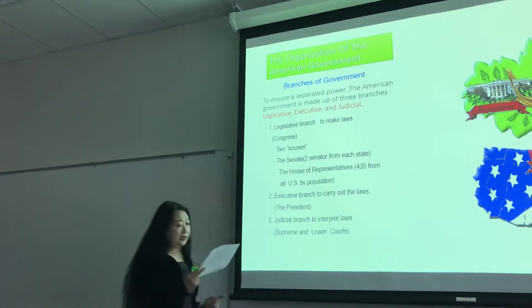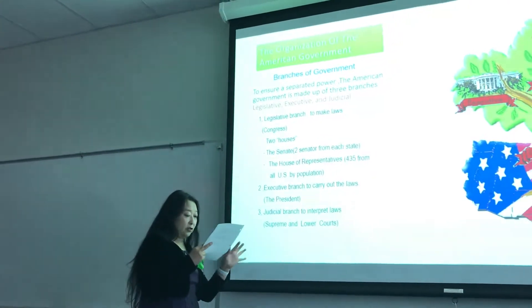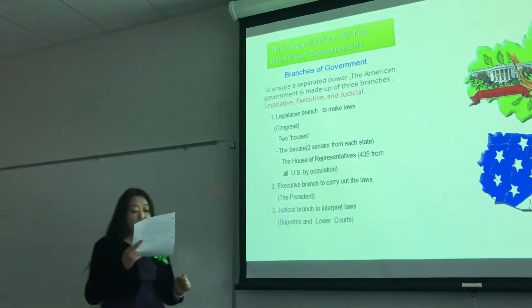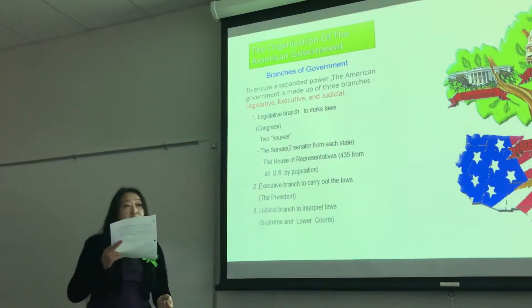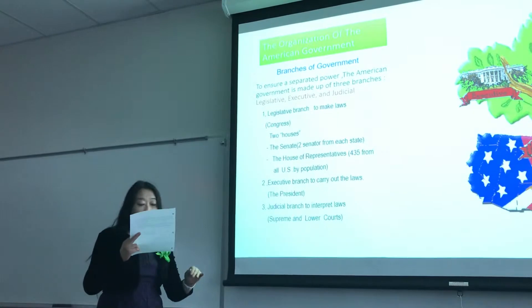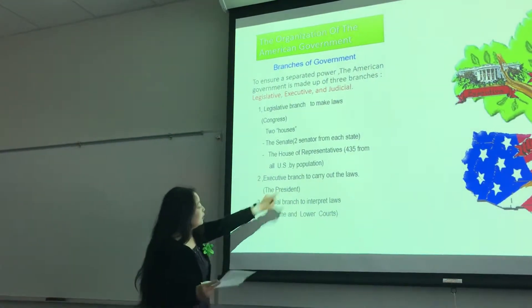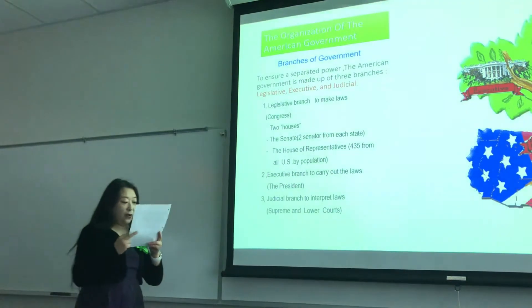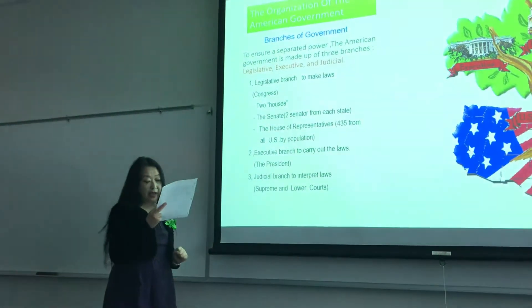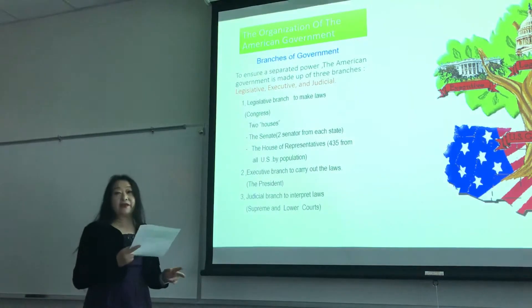The legislative branch is made up of Congress, which makes laws. Congress has two houses. The Senate has two senators from each state. The House of Representatives has 435 representatives divided among the 50 states according to the size of their population.